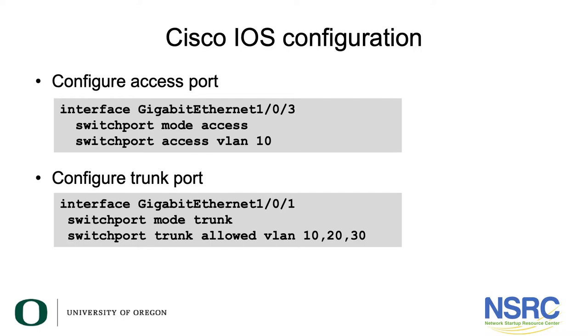Let us look at how different vendors configure VLANs in their different syntaxes, starting with Cisco. To configure an access port, you go into the interface and say the switchport mode is access and the access VLAN is VLAN 10 in this example on the slide.